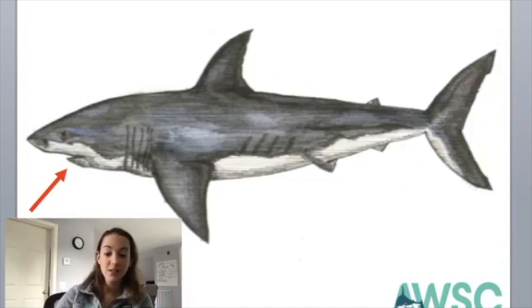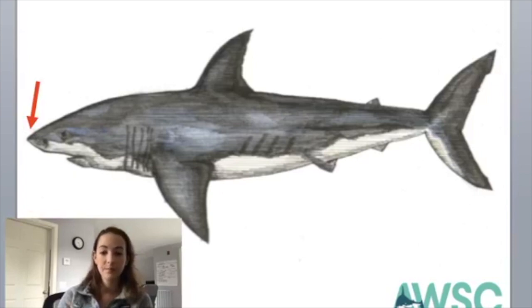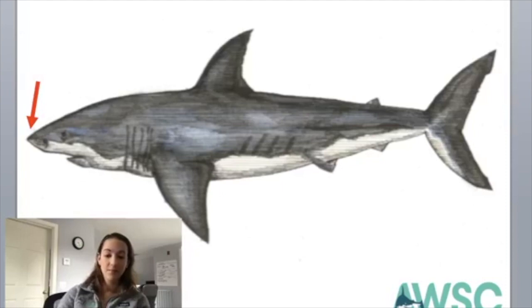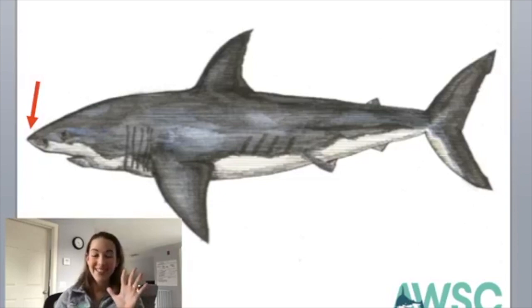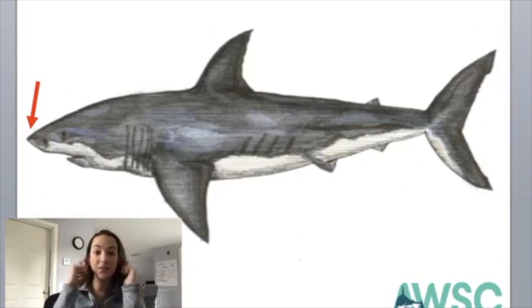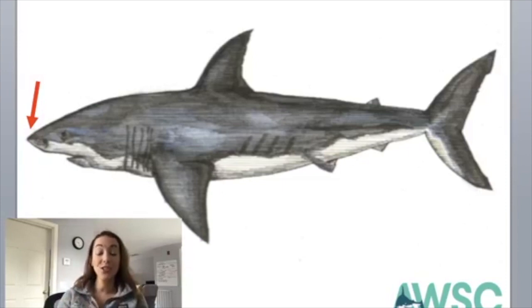Last but not least, what makes our shark a shark is their senses. How many senses do we have as humans? We have five senses: sight, hearing, touch, smell, and taste. Sharks have all five of those senses that we do — but sharks also have a special sixth sense in their body.